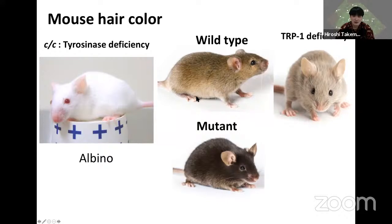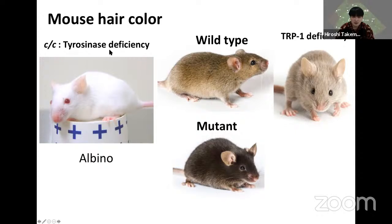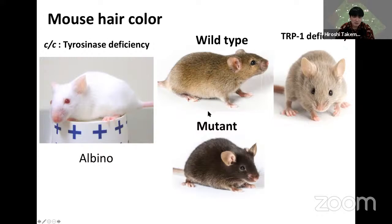This shows mouse hair color. Wild-type mice show brown hair. We usually use black mice for genetic and pharmaceutical approaches. If tyrosinase is deficient, the genotype produces albino. TRP-1 deficiency makes a cream or bright color. So melanin production is very important for mammalian hair color.